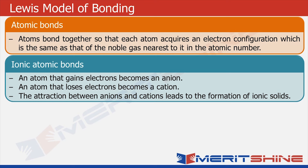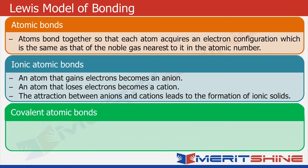An atom that loses electrons becomes a cation, that is a positively charged ion. The attraction of anions and cations leads to the formation of ionic solids. This explains ionic bonding.